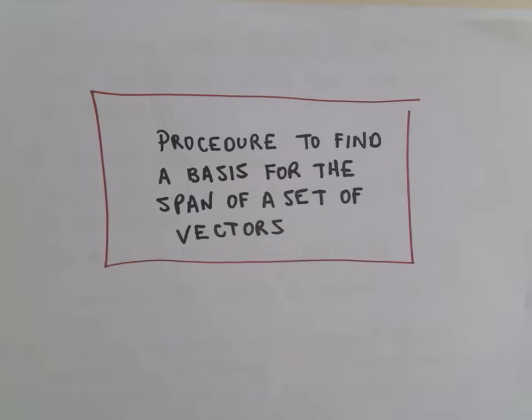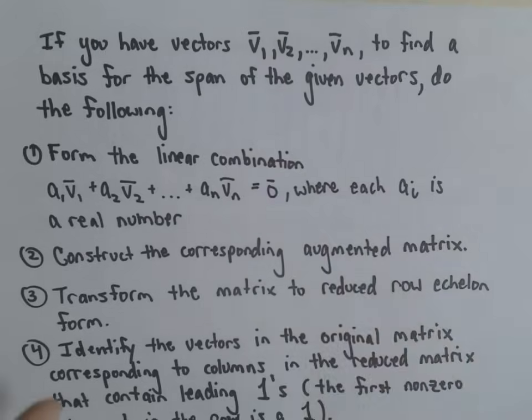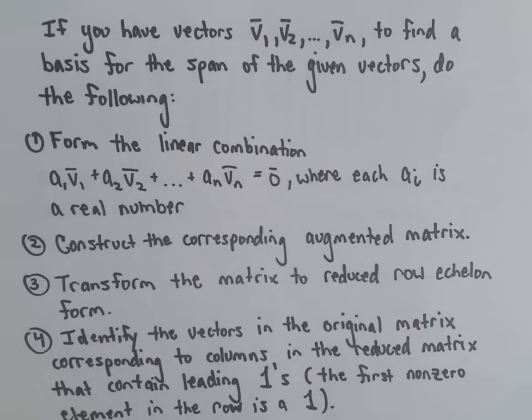All right, in this video we're going to look at a procedure to find a basis for the span of a set of vectors. And all it really involves is a bunch of row reducing. So at this point hopefully you're an expert on it, everybody's favorite thing, a little row reduction. So the procedure is as follows.